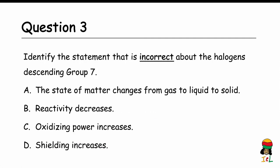Question 3: Identify the statement that is incorrect about the halogens descending Group 7. A. The state of matter changes from gas to liquid to solid. B. Reactivity decreases. C. Oxidizing power increases. D. Shielding increases. The answer is C. The incorrect statement is that oxidizing power increases going down Group 7 — as we know, oxidizing power decreases going down Group 7.